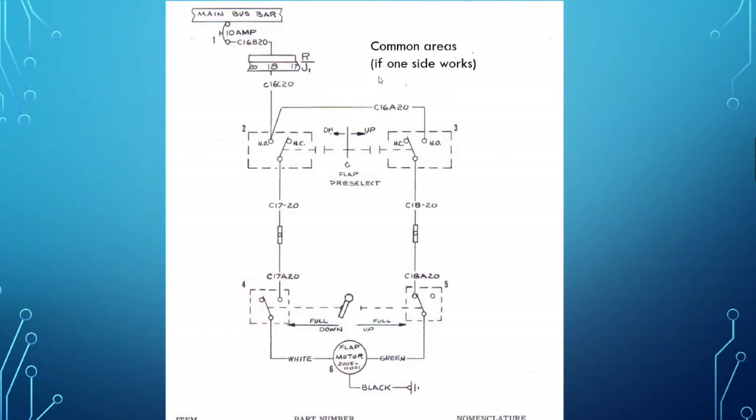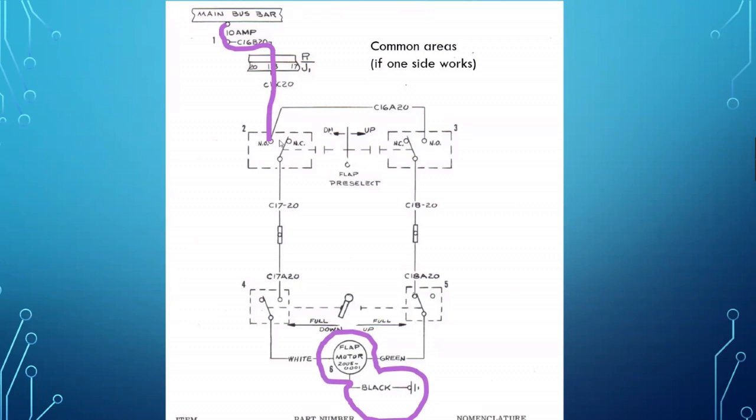One of the things is common areas. Common areas can eliminate problems for you. If one side works but not the other, you could tell me that you have power all the way to here, you know that. And you know that the motor actually works. By looking at what information is given to you or what information you can get by testing the problem, that can get you to a good area to start.